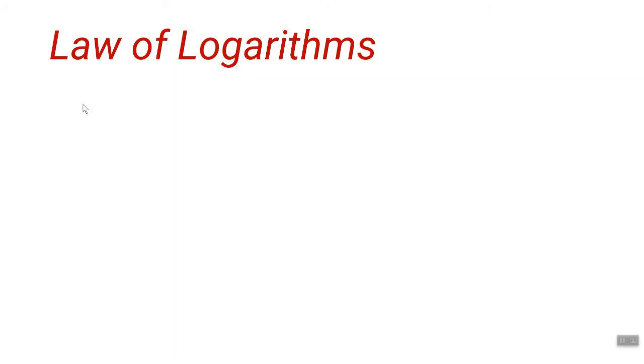So far we've been working in base 10, and calculators have a button for log base 10. But we could work in other bases. If we have log base 2 of 8 = x, we rearrange to 2^x = 8 and solve to get x = 3, since those are nice integers. But if we had log base 7 of 23 = x, we'd get 7^x = 23, which is much harder to evaluate directly.